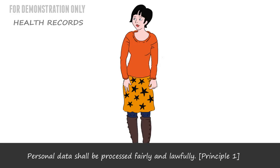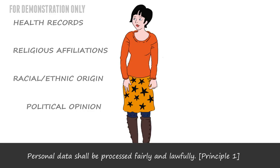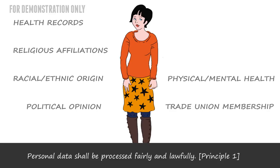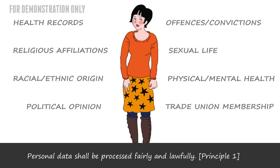Laura's health record, religious affiliations, racial and ethnic origin, political opinions, membership of trade unions, physical or mental health condition, her sexual life, and most things to do with any offences or alleged offences she may have committed are all sensitive personal data. It's fairly clear to see why it needs to be treated with greater care than other personal data, and why explicit consent is needed.